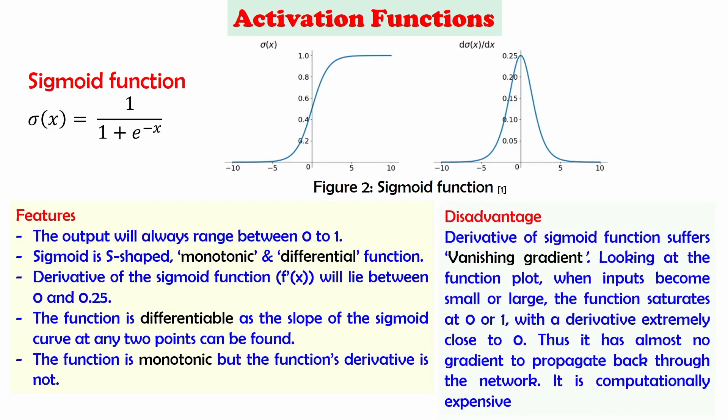The disadvantage of the sigmoid function is that its derivative suffers from the vanishing gradient problem. Looking at the function plot, when inputs become very small or very large, the function saturates at 0 or 1 with a derivative extremely close to 0. Thus, there is almost no gradient to propagate back through the network. It is also computationally expensive.